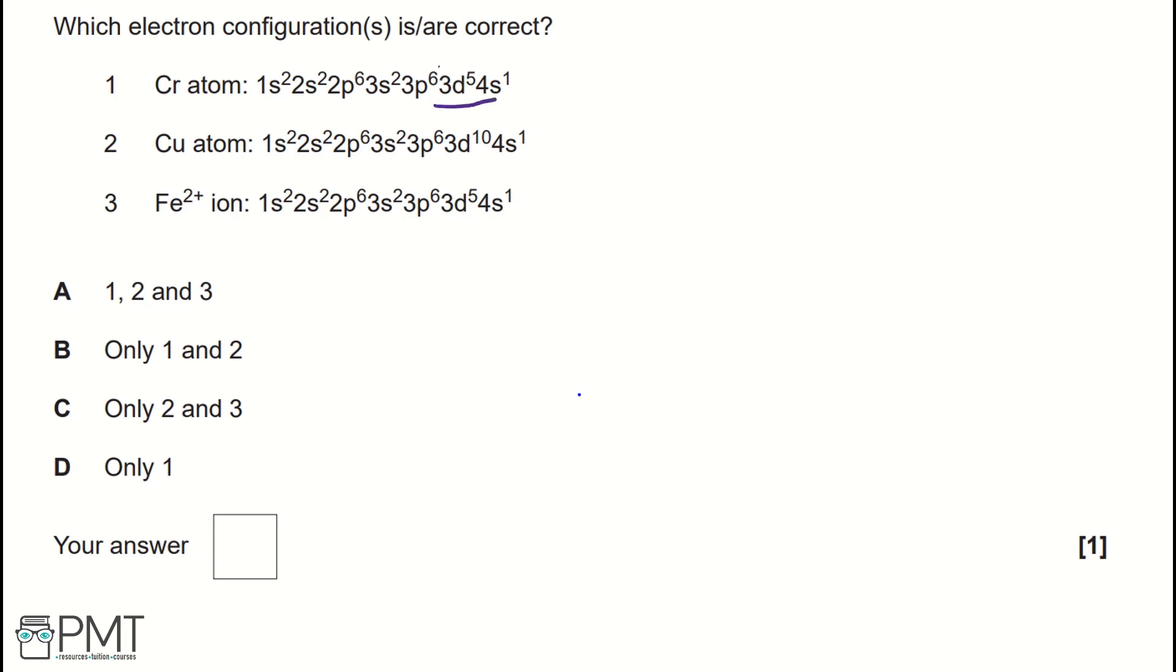If we refer to a periodic table, we would expect the 3d5, 4s1 and 3d10, 4s1 in chromium and copper to be 3d4, 4s2 and 3d9, 4s2.